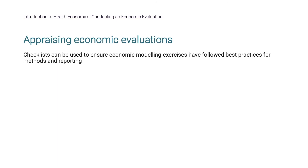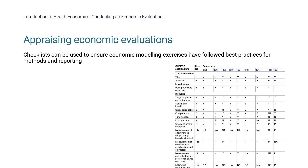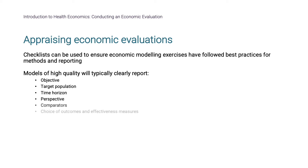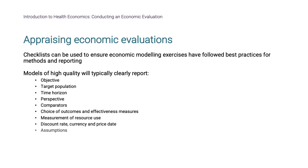Checklists can be used to ensure economic modeling exercises have followed best practices for methods and reporting. The CHEERS checklist is the most commonly used for assessing reporting quality and has 17 different items. Models of high quality will typically clearly report the objective, target population, time horizon, perspective, comparators, choice of outcomes and effectiveness measures, measurement of resource use, discount rate, currency and price date, assumptions, analytic methods, and the uncertainty analysis.